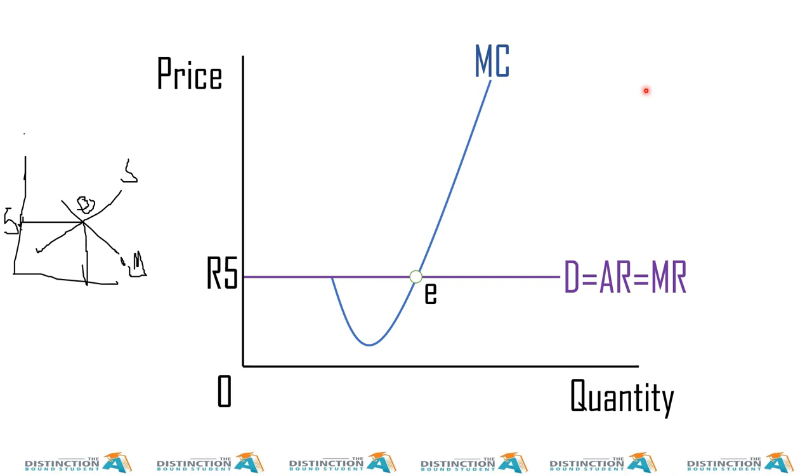So what does that point give us? It gives us the profit maximizing output or quantity. And in this case, our profit maximizing output is 10 units. Now with this in mind, the firm is maximizing its profit at 10 units and it's selling whatever it is that it makes at five Rand.